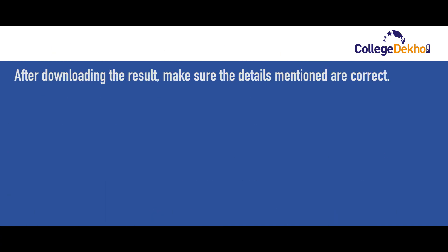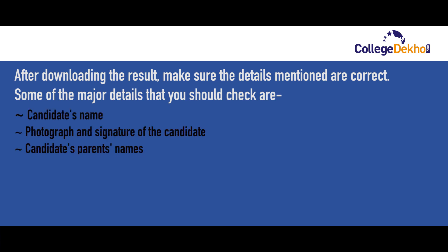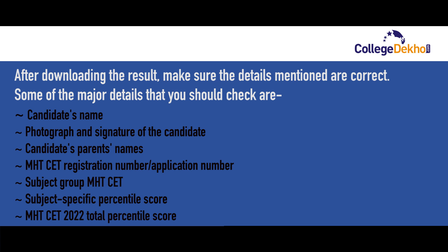After downloading the result, make sure the details mentioned are correct. Some of the major details that you should check are: candidate's name, photograph and signature, candidate's parent's name, MHT-CET registration number and application number, subject group, subject-specific percentile score, and MHT-CET 2022 total percentile score.